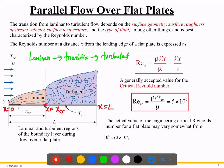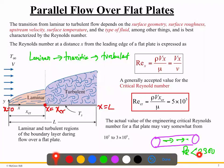We use the Reynolds number to determine whether flow is laminar or turbulent. For internal flow — meaning flow inside a pipe — the critical Reynolds number is 2300. For external flow, such as flow over a flat plate, we use the Reynolds number formula: Re_x = ρ·V·x / μ, where ρ is density and μ is dynamic viscosity.